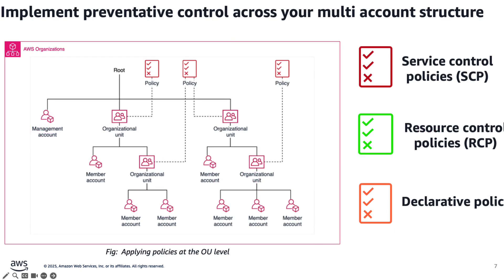One of the most powerful features of AWS Organizations is Service Control Policies, or SCPs. These policies let you set controls across your organization by restricting which AWS services and actions are available in member accounts. Additionally, you have resource policies that can be applied at an instance level, and declarative policies that allow you to centrally define and enforce desired configuration for AWS services across your organization, ensuring consistent behavior even as services evolve.